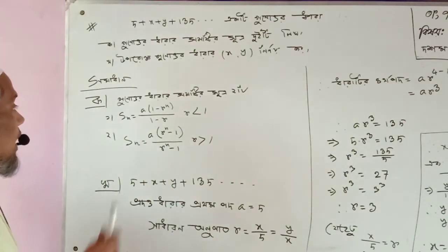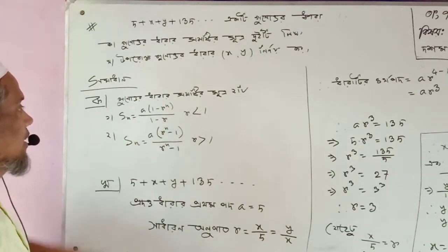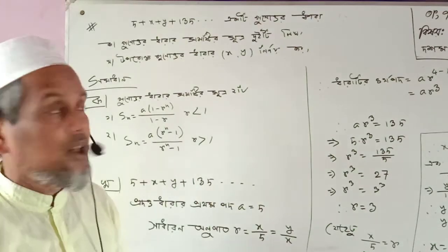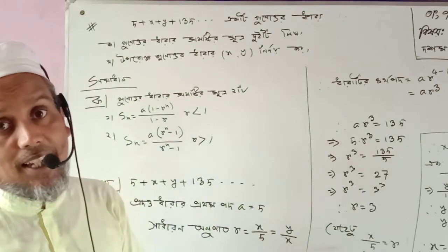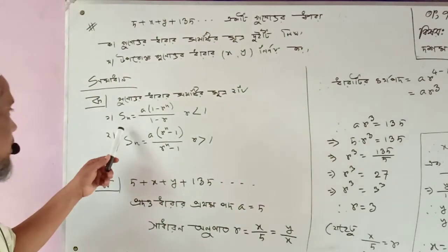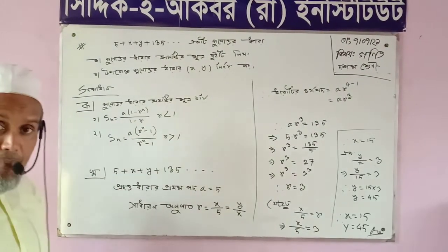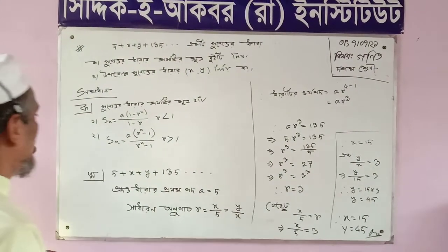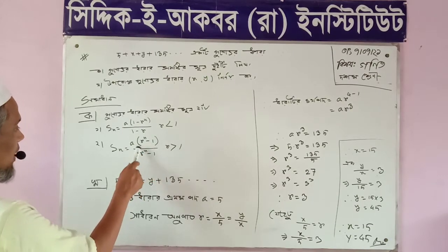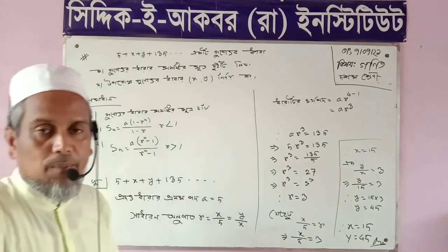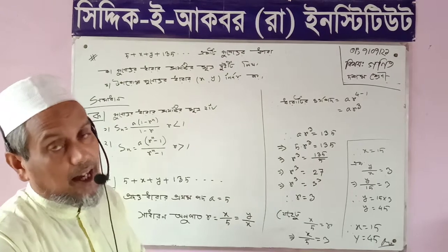So A is equal to A into 1 minus R quarter into M by 1 minus R. Then the ratio is equal by A into R to M into R to R alpha. If you add 1, then you add 1. Here we put 1, 2.